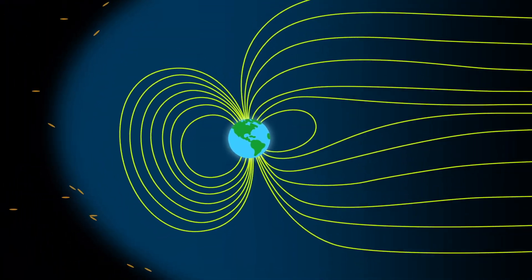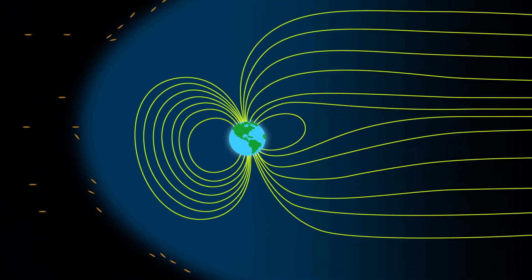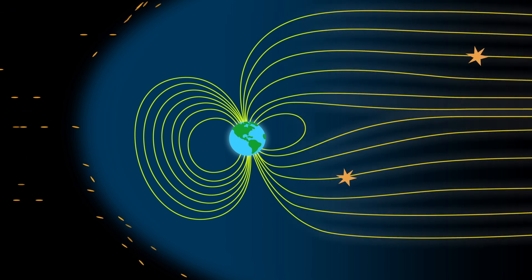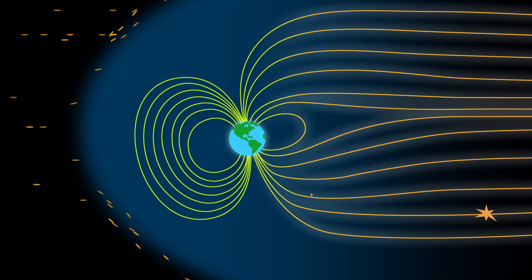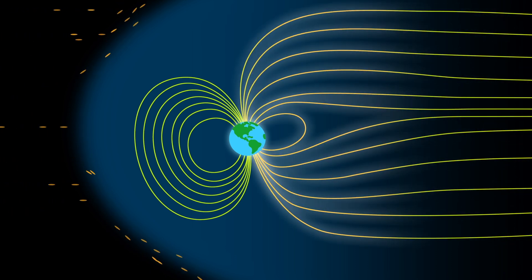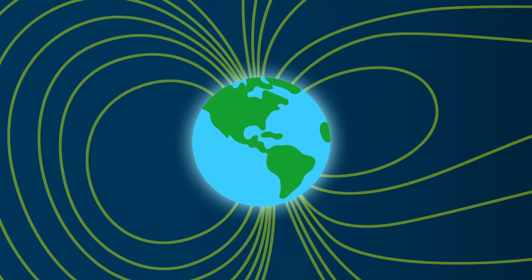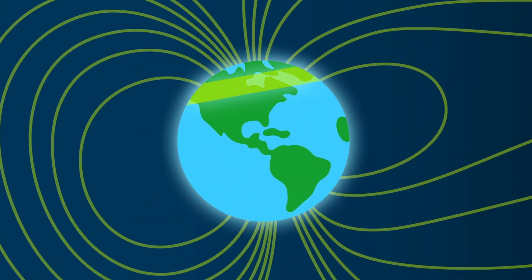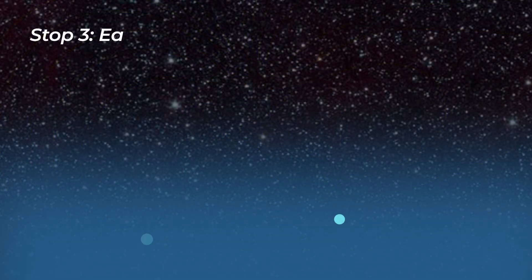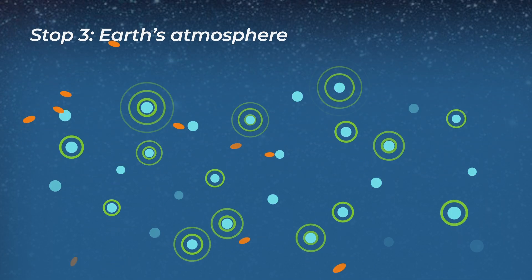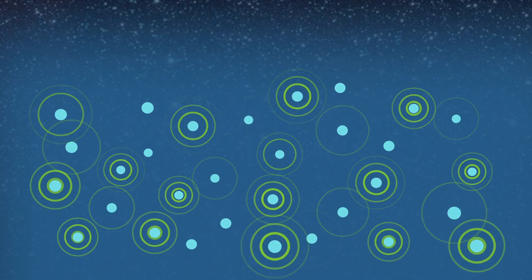But not all of the particles from space get deflected. Some of them get trapped in the magnetic field, and then funneled into one of these two areas — one near the magnetic north pole, and one near the magnetic south pole. There, they collide with particles in Earth's atmosphere and transfer energy to them.